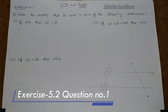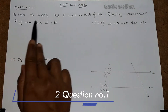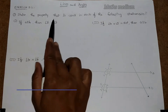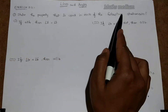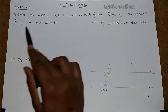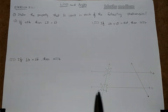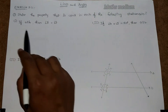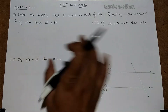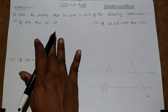Question number 1: state the property that is used in each of the following statements. Here is the given figure, so we have to state the property by using this figure and this statement.